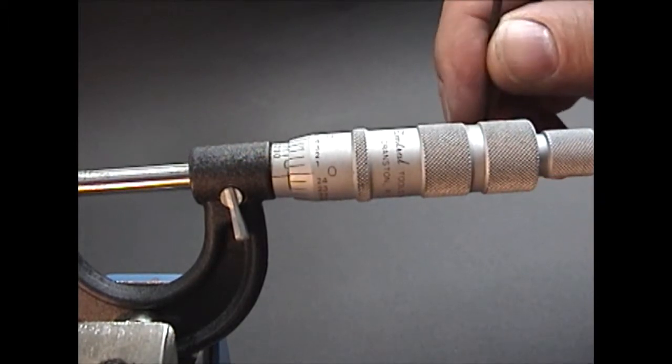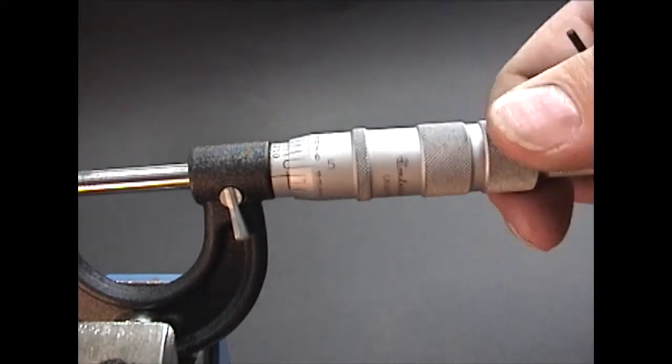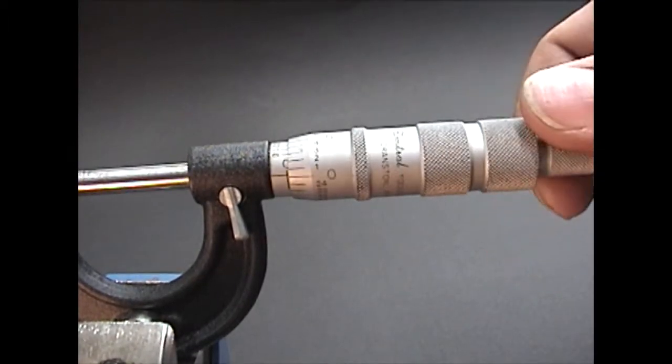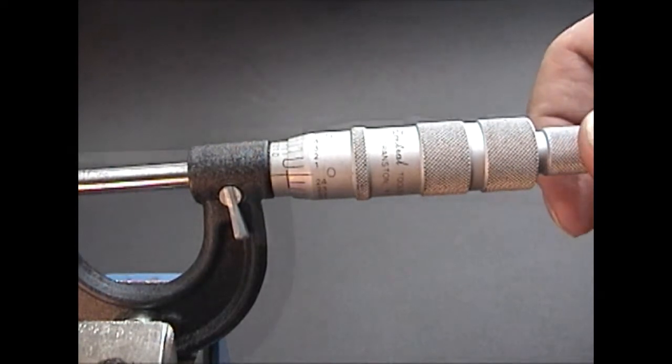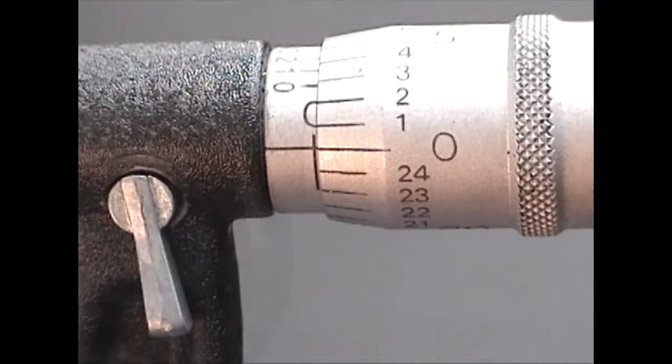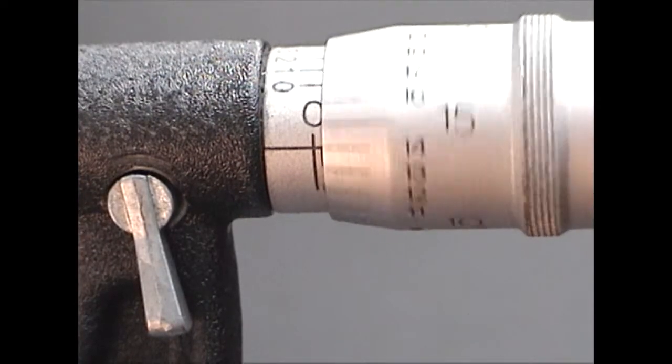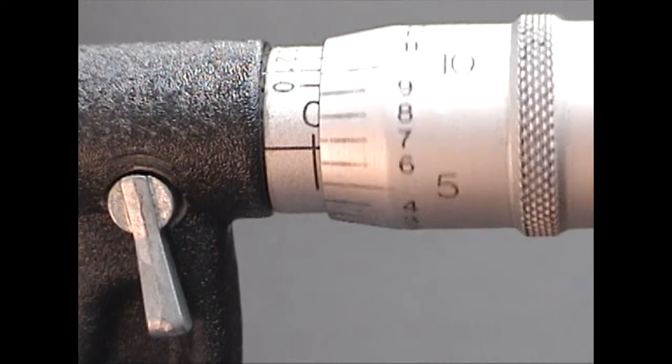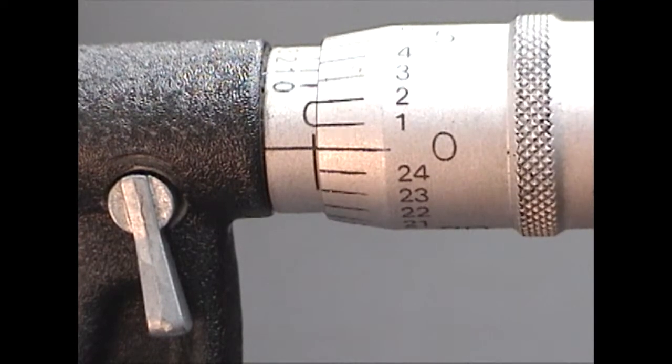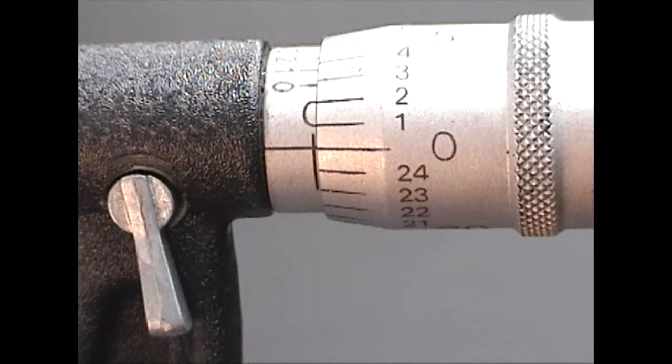Once the set screw is snug, tighten it some more so it won't come loose. Open and close the micrometer a couple of times to check the adjustment. Make sure the zero lines are properly lined up.